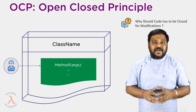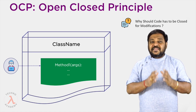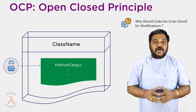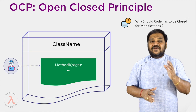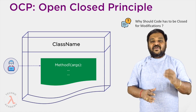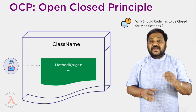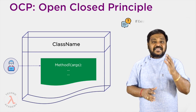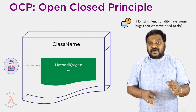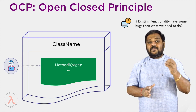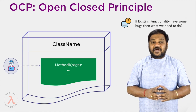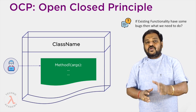Another advantage is that making changes or modifications might break the dependent code when we deploy updates, and if any developer is watching this course they might have observed this kind of problem practically in their work. If the existing functionality has a bug, it is okay to modify the definition for bug fixes, but for new requirements or changes in existing requirements it is always advisable to follow this principle.